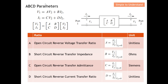Let's understand the ABCD parameter names. A is known as the open-circuit reverse voltage transfer ratio. To obtain A, I need to let I2 equal zero. When I2 equals zero, I have an open circuit at the output. With that open circuit, this term disappears and A is simply V1 over V2, as you can see from the equation.